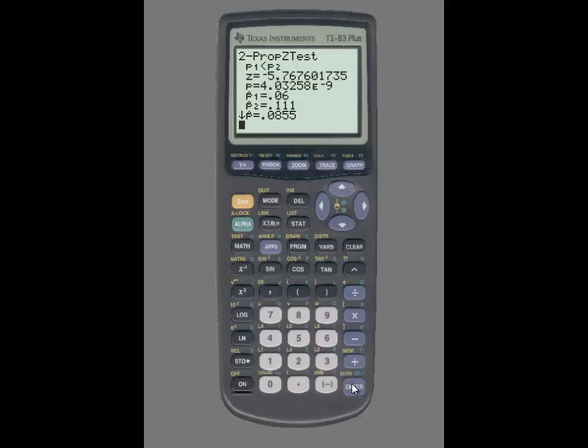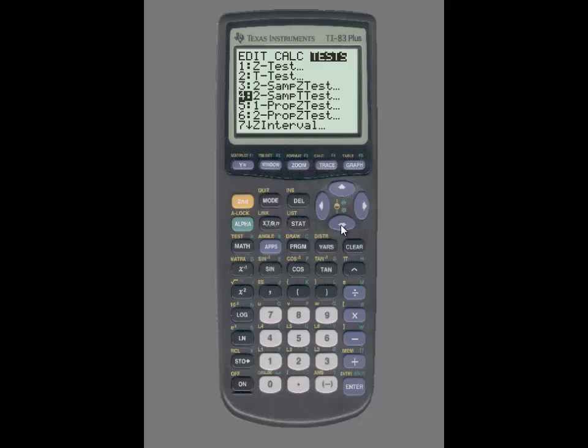Next, we are going to use the 2PROP Z interval function to construct a confidence interval. So again, we are going to press STAT, use the right arrow key to highlight TESTS, and scroll down until you see 2PROP Z interval.